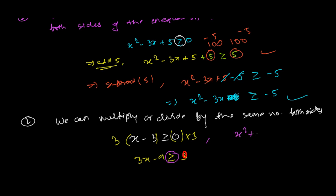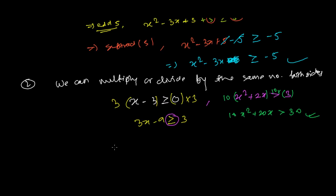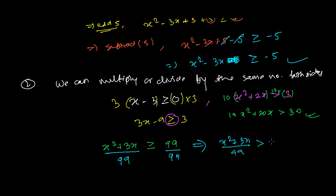Similarly, if I have x² + 2x > 3 and I multiply both sides by 10, it becomes 10x² + 20x > 30. For division, if I have x² + 3x ≥ 99 and divide both sides by 99, it becomes (x² + 3x)/99 ≥ 1. I can multiply as well as divide by the same number on both sides.